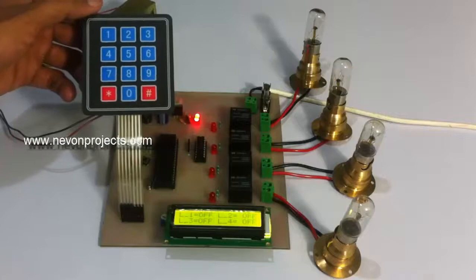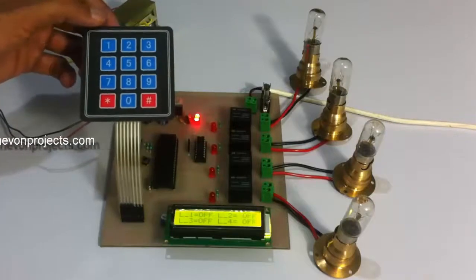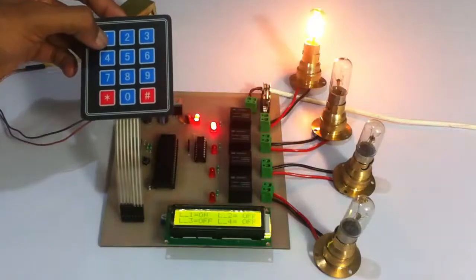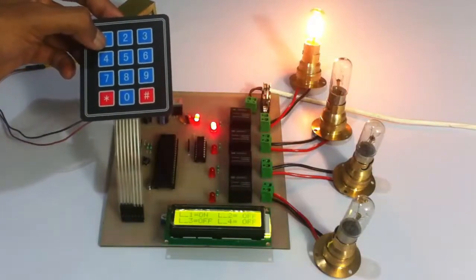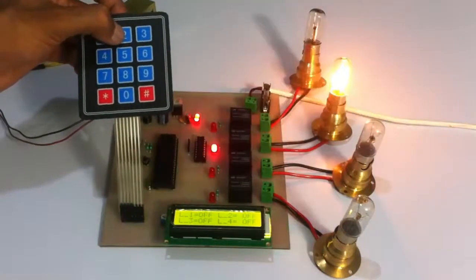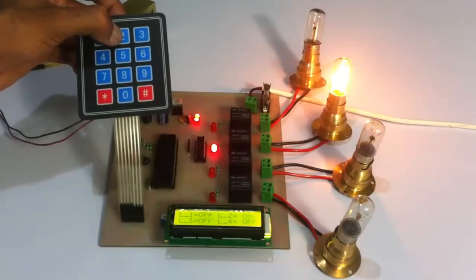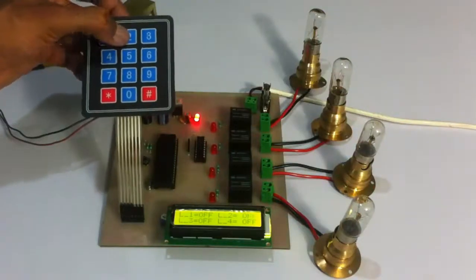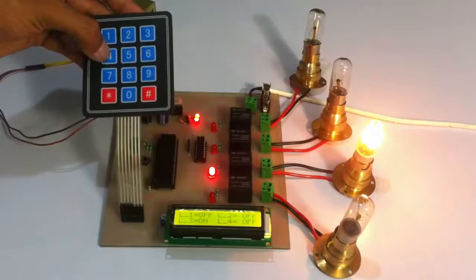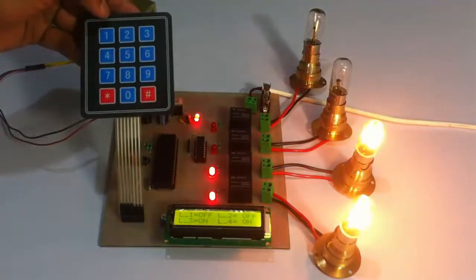Let's press 1 to switch line 1 on. Similarly, 1 again to switch line 1 off. Similarly 2—let's press 2 for line 2, and again 2 for off. Similarly 3 and 4, and 3 and 4 off again.